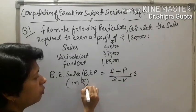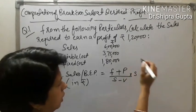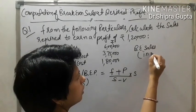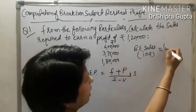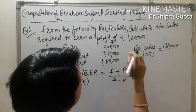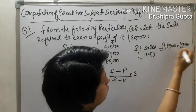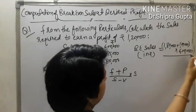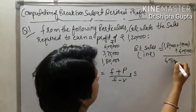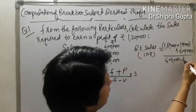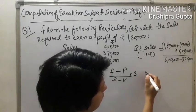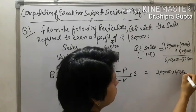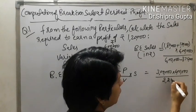We apply this only in rupees terms because these two items are given as lump sum amounts. Putting in the values: Break-Even Sales (₹) = (1,80,000 + 1,20,000) / (6,00,000 − 3,75,000) × 6,00,000. That gives us 3,00,000 divided by 2,25,000, multiplied by 6,00,000.